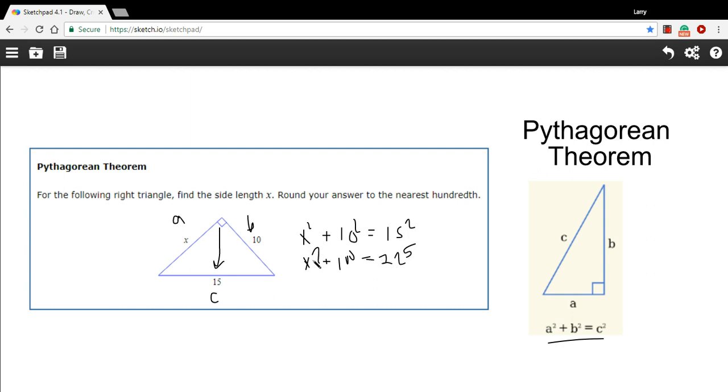Now once we get to this point, we've got X squared plus 100 equals 225. We want to solve for X, so we want to get this X variable alone. So the first thing I'm going to do is get rid of this plus 100 by subtracting 100 from both sides, and we get X squared equals 125.